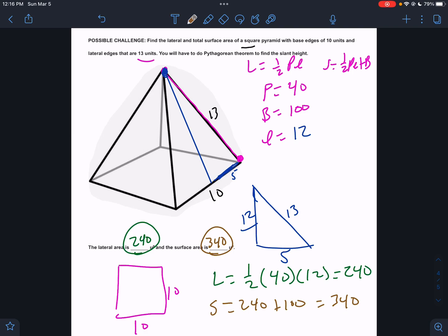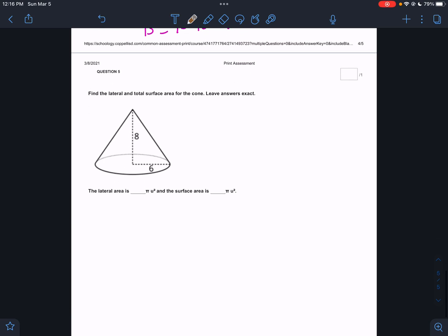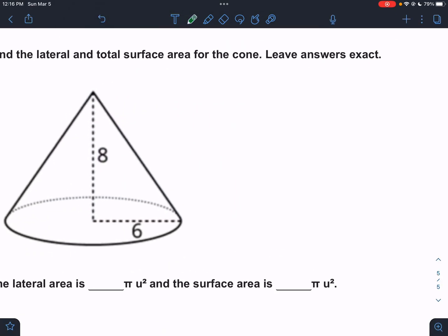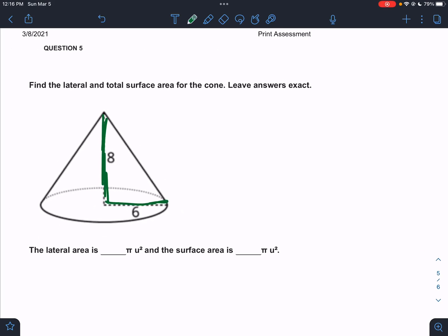So hopefully that made sense to you. So we're going to do number 5 here. We've got a cone. And they labeled it so nicely for us. They won't always do that. But we have a height. Oh, that's all they gave us, actually.